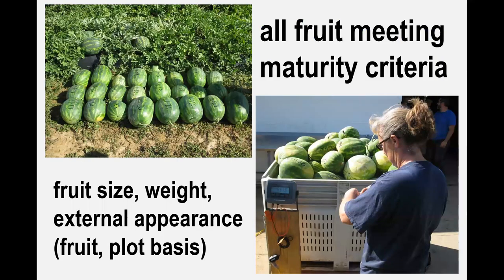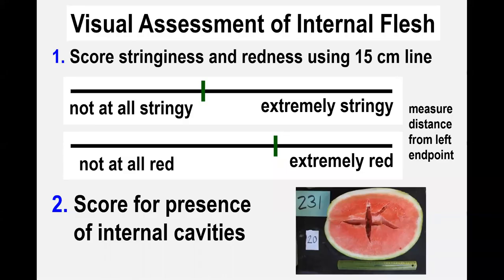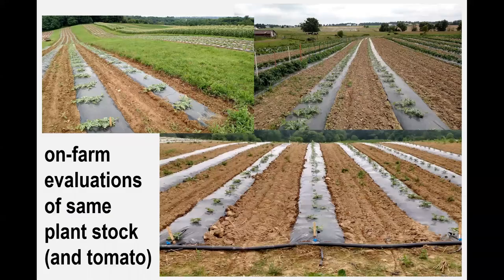The basics of the process include fruit selection and collection, then photographs, internal characteristics, and Brix measurements and ratings, including colorimeter ratings — all completed using accepted procedures and rating instruments. I would also like to underscore that companion evaluations are being completed on the farms of grower cooperators using the same plant stock and, in some cases, additional grafted tomato plant stock used in separate experiments and evaluations, but that is a story for another time.